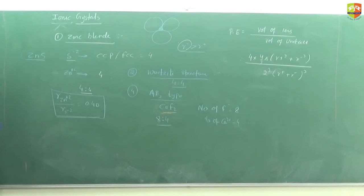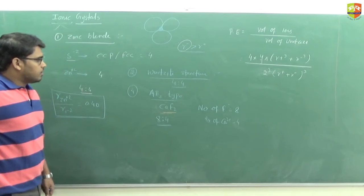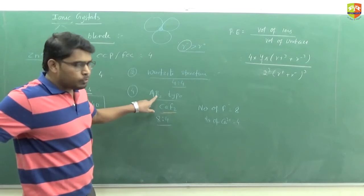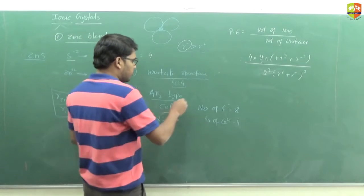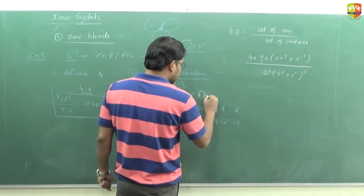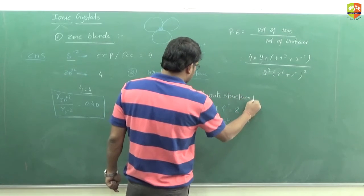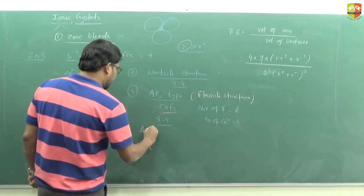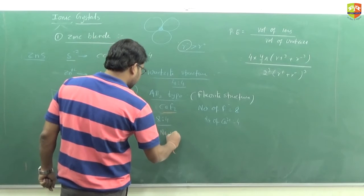Examples of fluorite structure: write down CrF₂, BaF₂, BaCl₂, etc. Next, structure of A₂B type - antifluorite structure. Example is Na₂O.